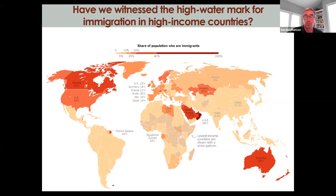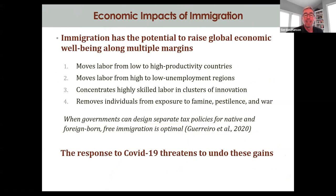In thinking about what COVID might do, I'd like to quickly run through what we know about what immigration actually does to the global economy. I want to highlight four things. First, immigration moves labor from low to high productivity countries. Second, within countries, immigrants tend to be footloose and help address spatial misallocation issues. Third, the global mobility of labor allows us to more fully exploit agglomeration economies. And fourth, something we don't spend nearly enough time talking about: immigration represents a form of insurance against very severe shocks related to famine, pestilence, and war.